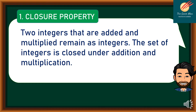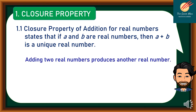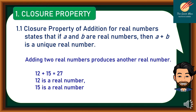For our first property, we have the closure property, which says that two integers that are added and multiplied remain as integers. The closure property of addition for real numbers states that if a and b are real numbers, then a plus b is a unique real number. For example, 12 plus 15 is equal to 27 — 12 is a real number, 15 is a real number, and 27 is a real number.